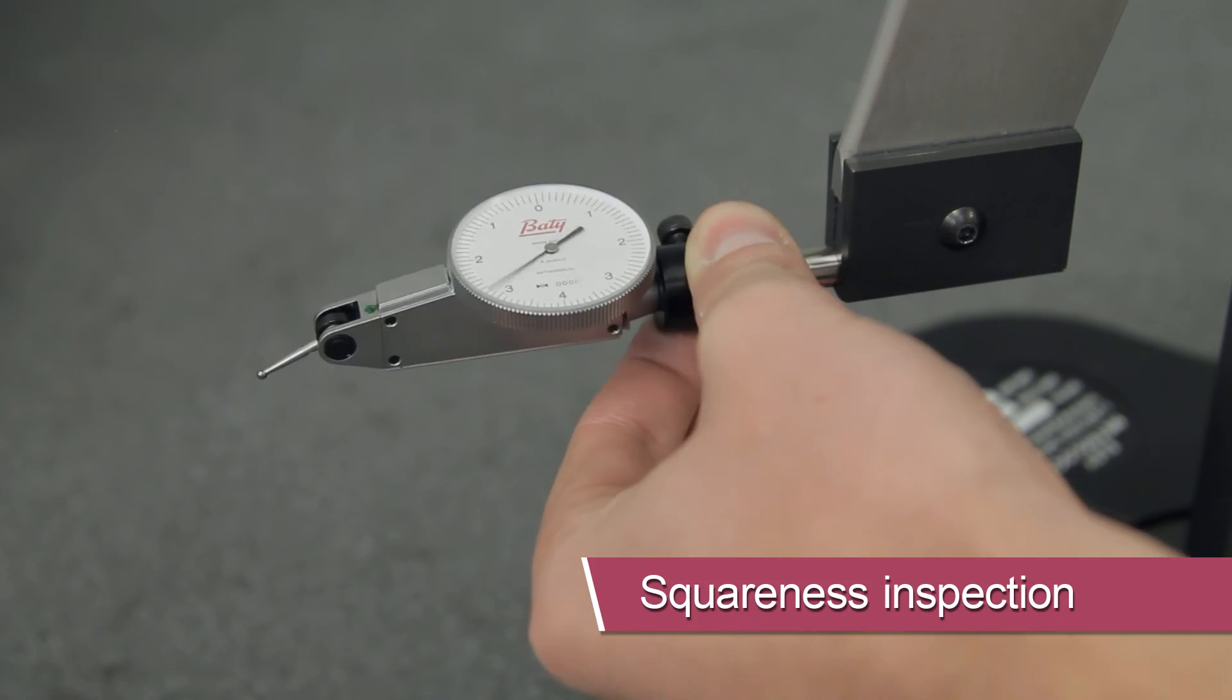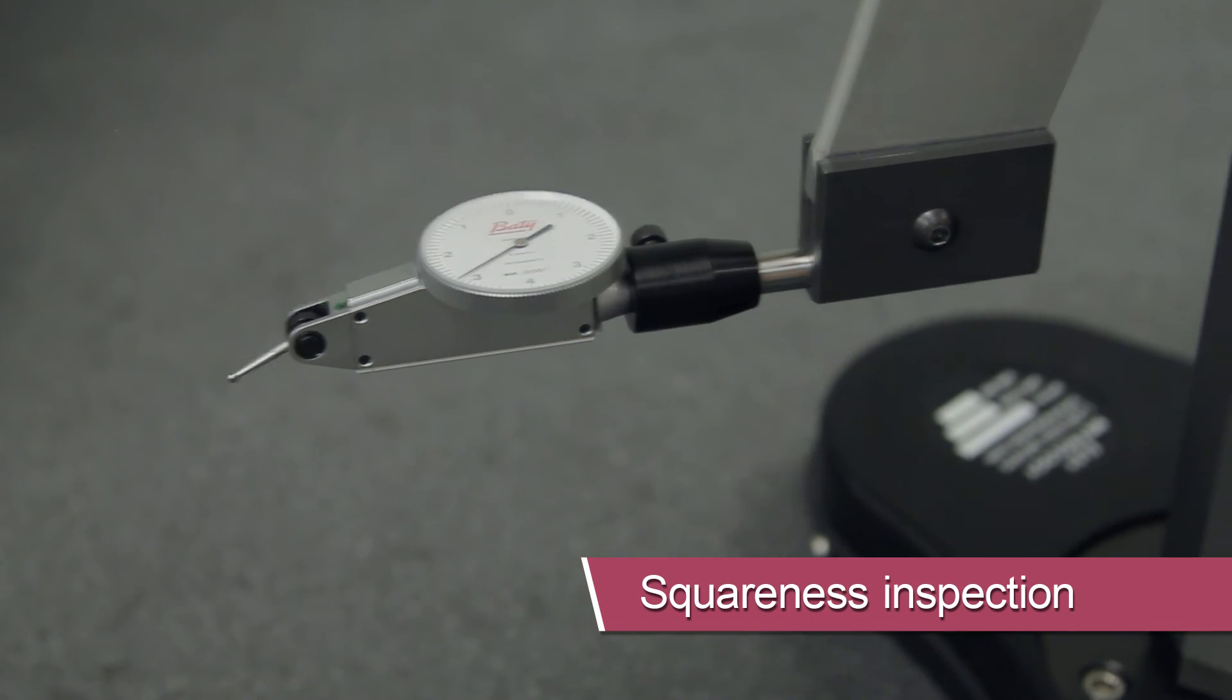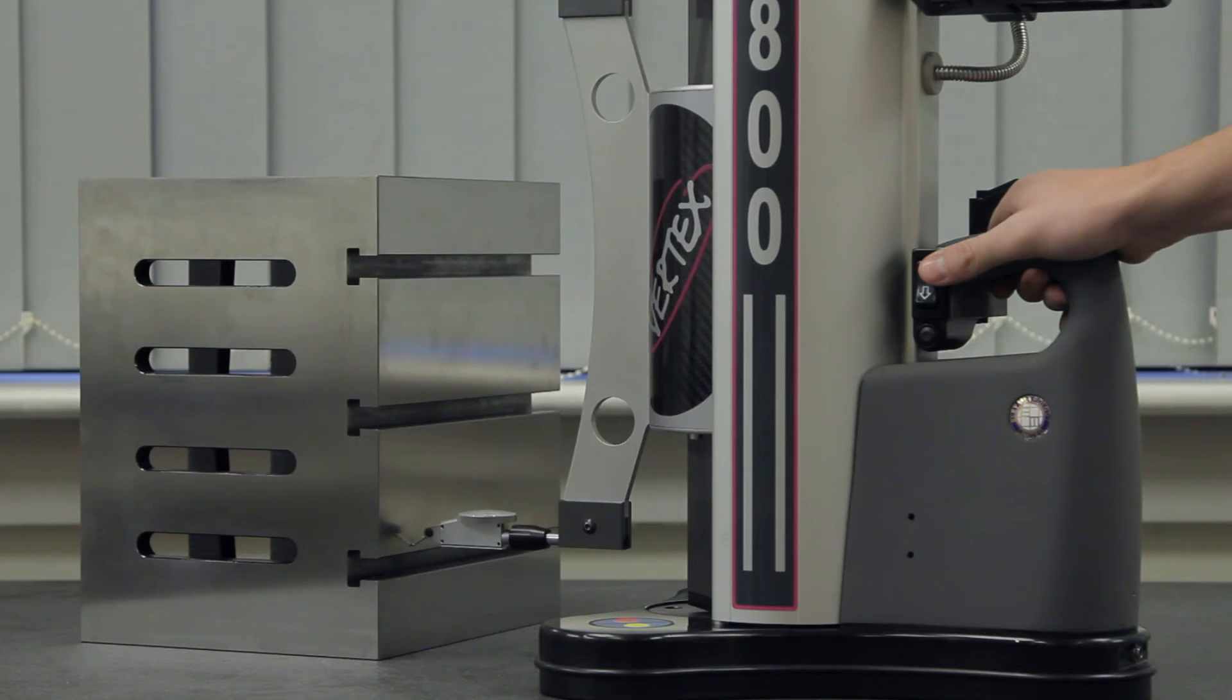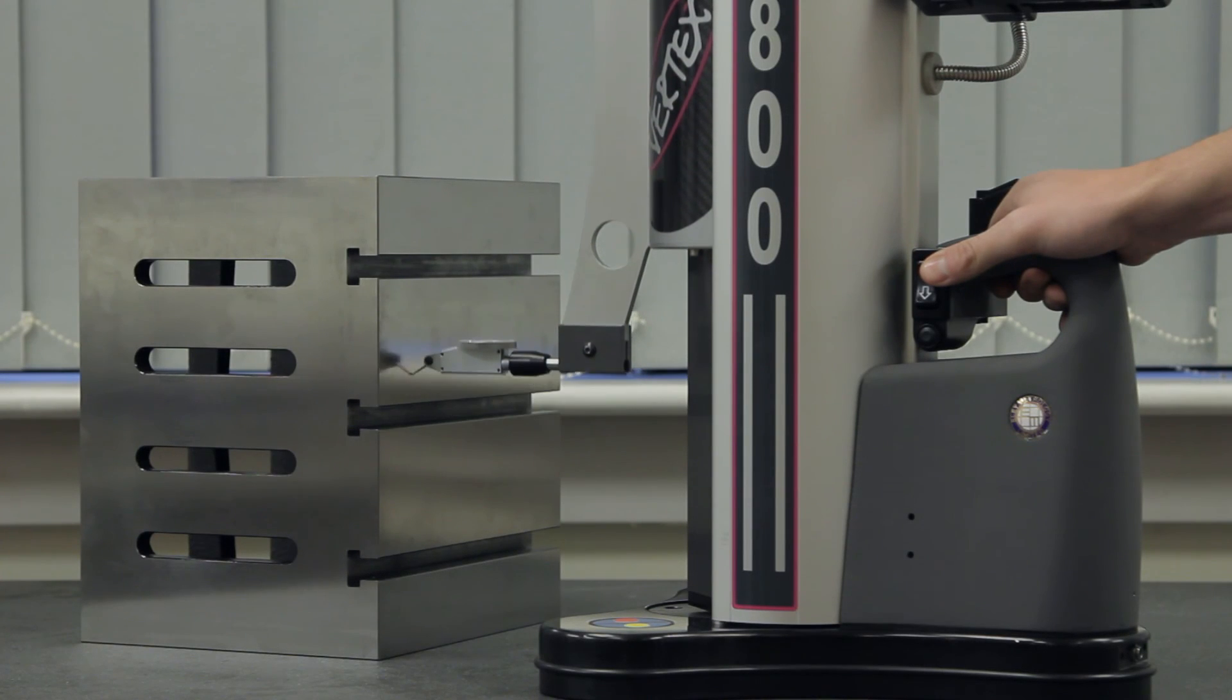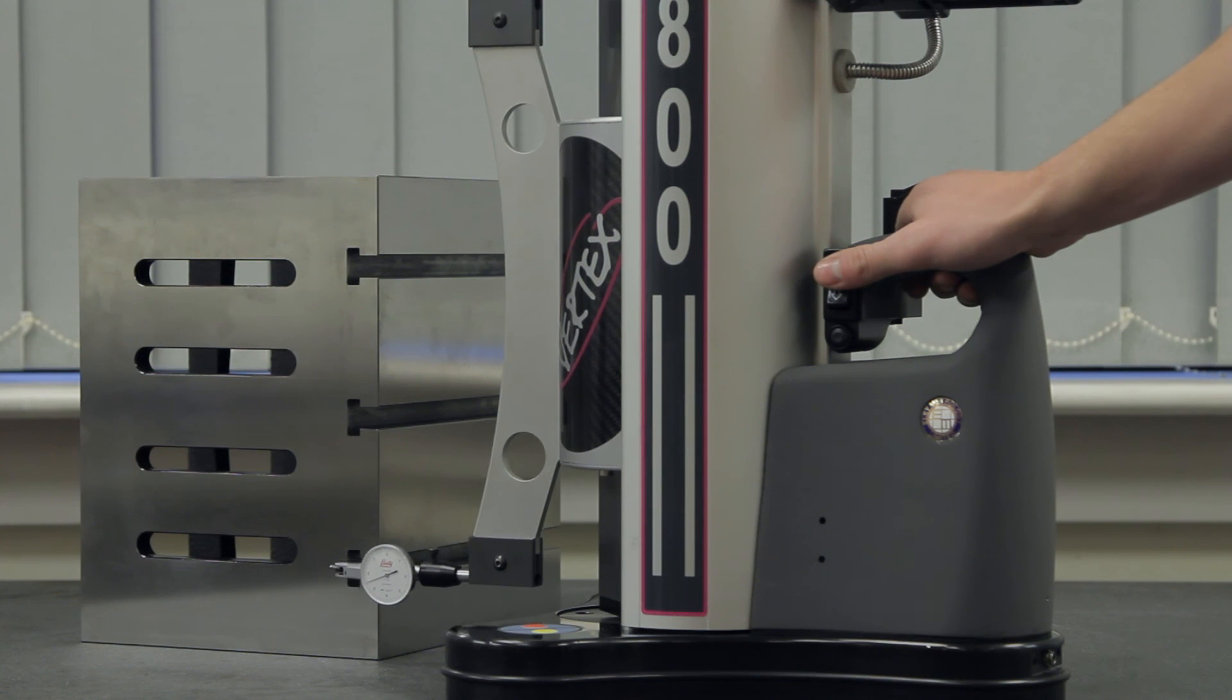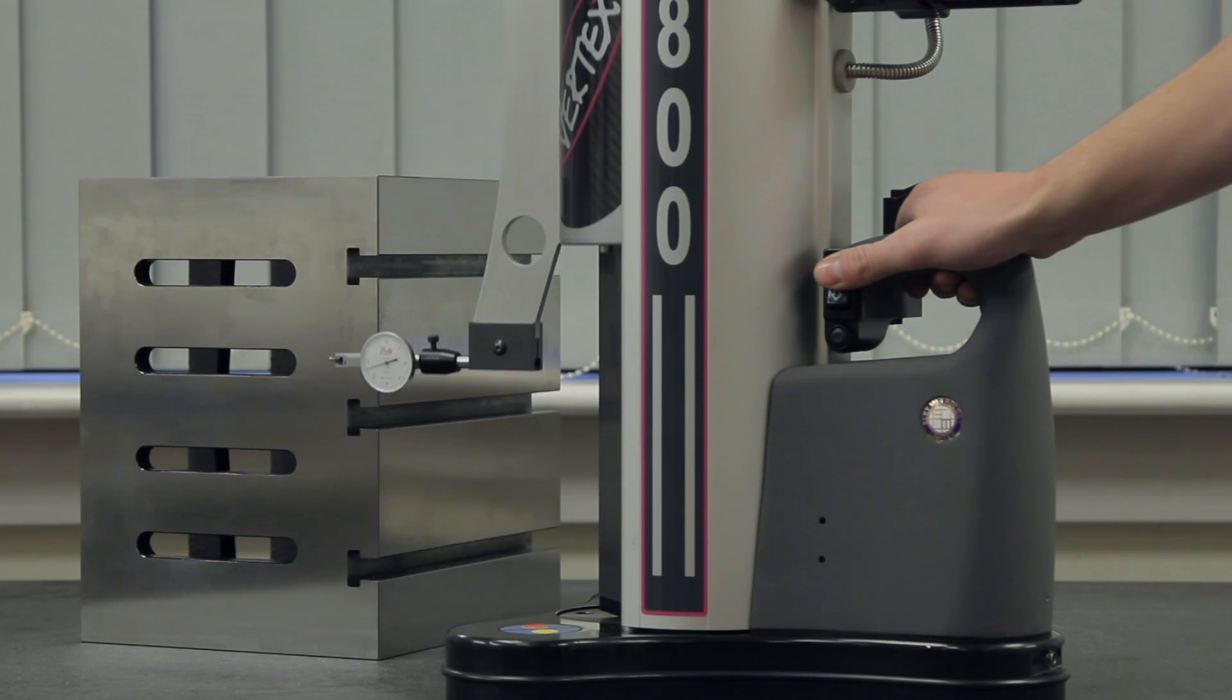A dial test indicator can be used to measure the straightness deviation of a surface. This can measure squareness and parallelism when additional surfaces are checked.